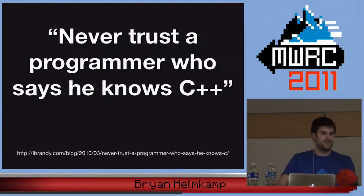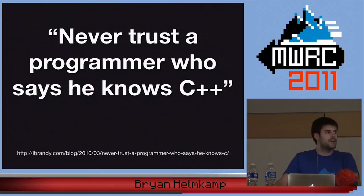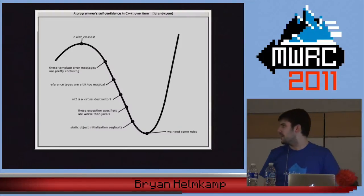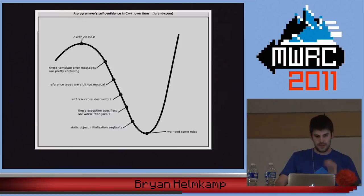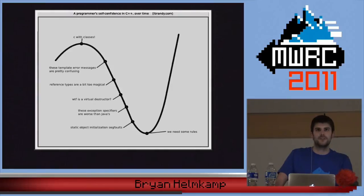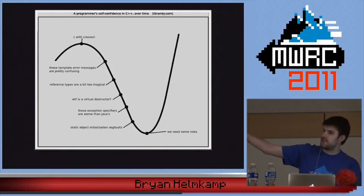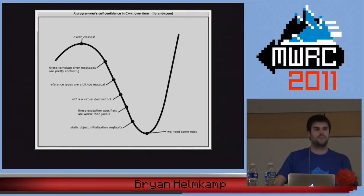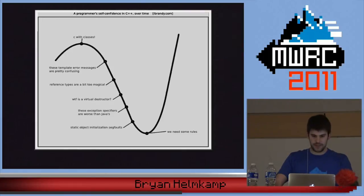There's a quote by Louis Brandy. He wrote it on his blog about a year ago and it stuck with me: 'Never trust a programmer who says they know C++.' The graph is of a programmer's self-confidence in C++ over time. In the upper left, the programmer has decided they know C++ — that it's just like C with classes, which is awesome because everyone knows objects are awesome — and they've conquered it and are going to use it for everything.